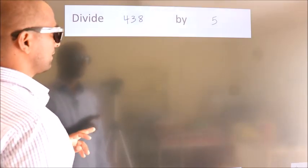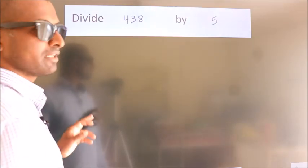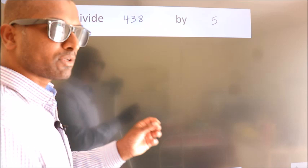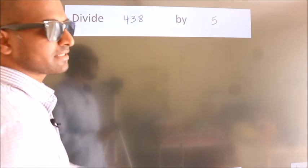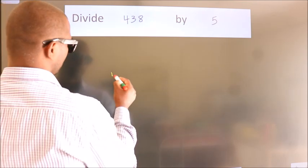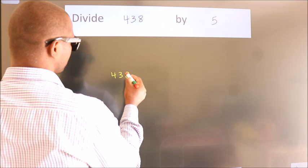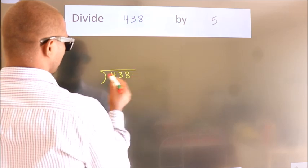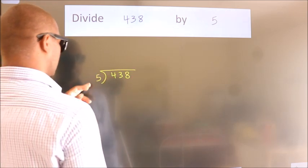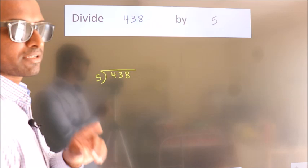Divide 438 by 5. To do this division, we should frame it in this way: 438 here, 5 here. This is your step 1.